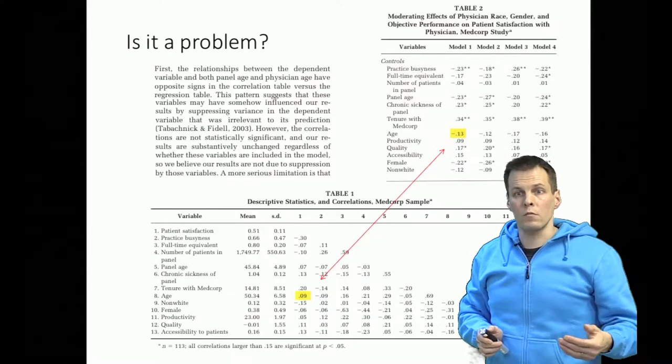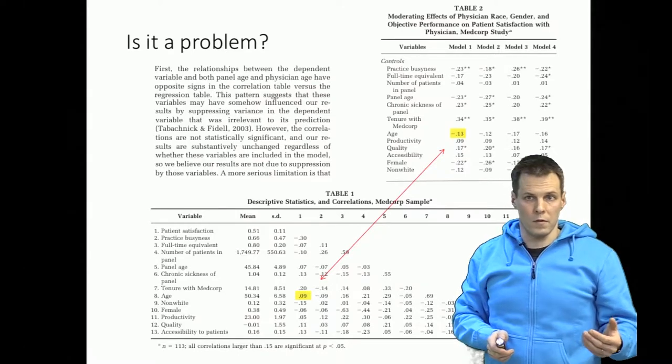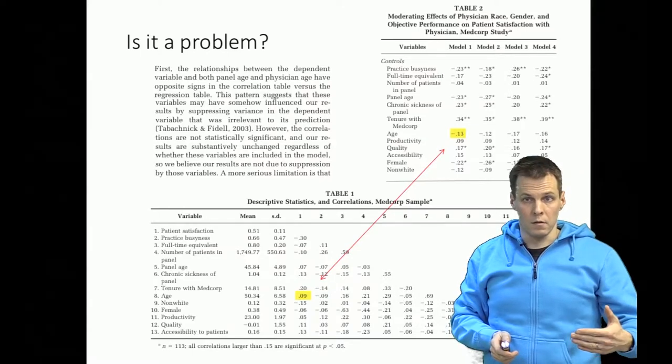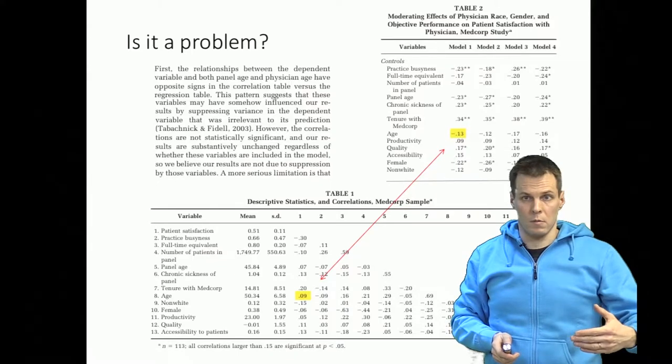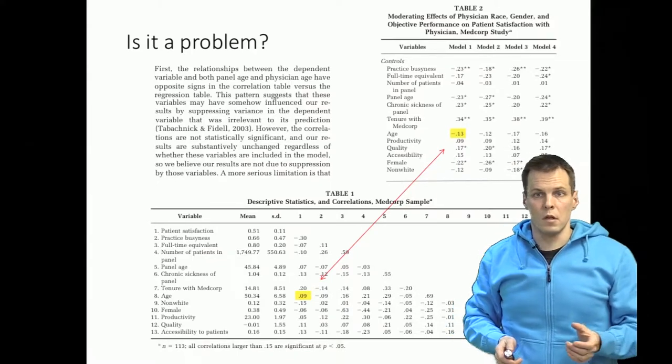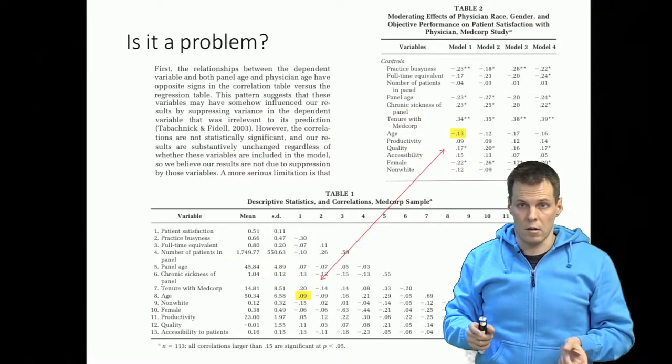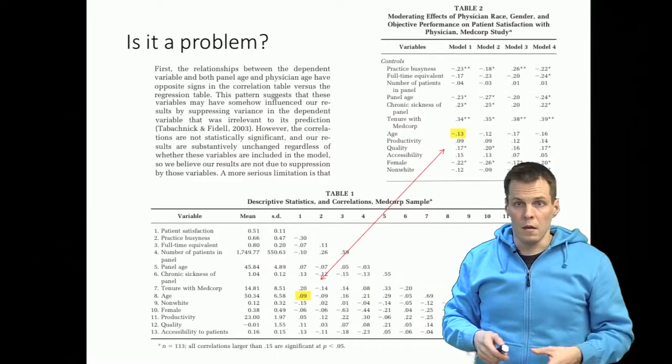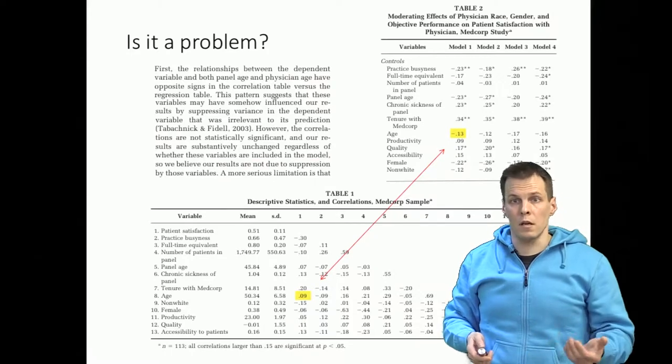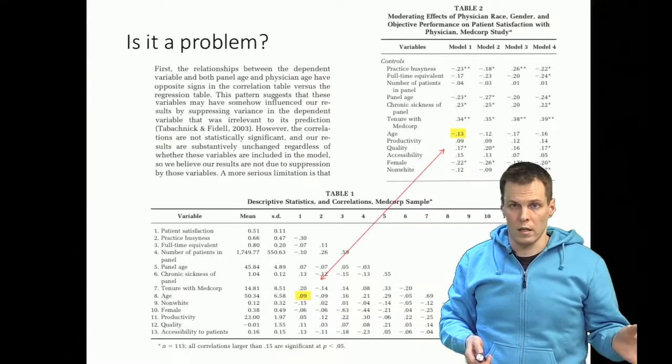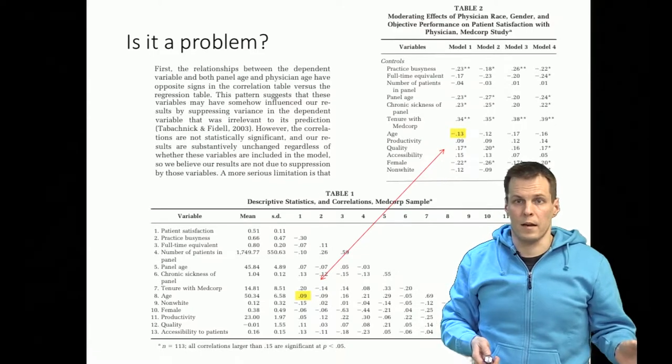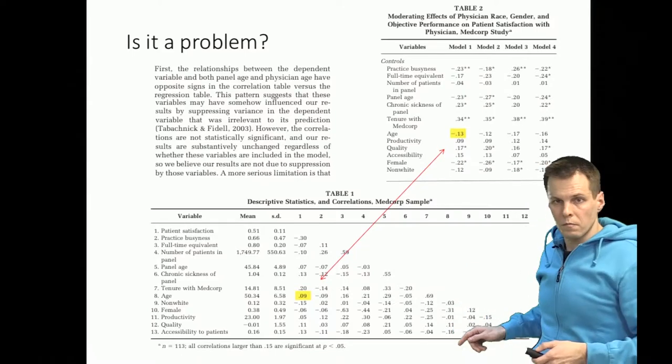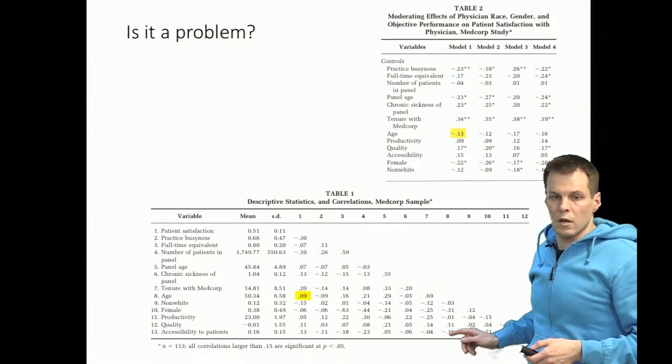We have to remember that correlation and regression coefficient quantify different things. So regression coefficient ideally quantifies a causal relationship under certain assumptions. Correlation coefficient quantifies a linear association that could be causal or it could be spurious. It's very simple to see here why the physician age is correlated positively with satisfaction but why the regression coefficient is negative. We just need to look at the correlation table.